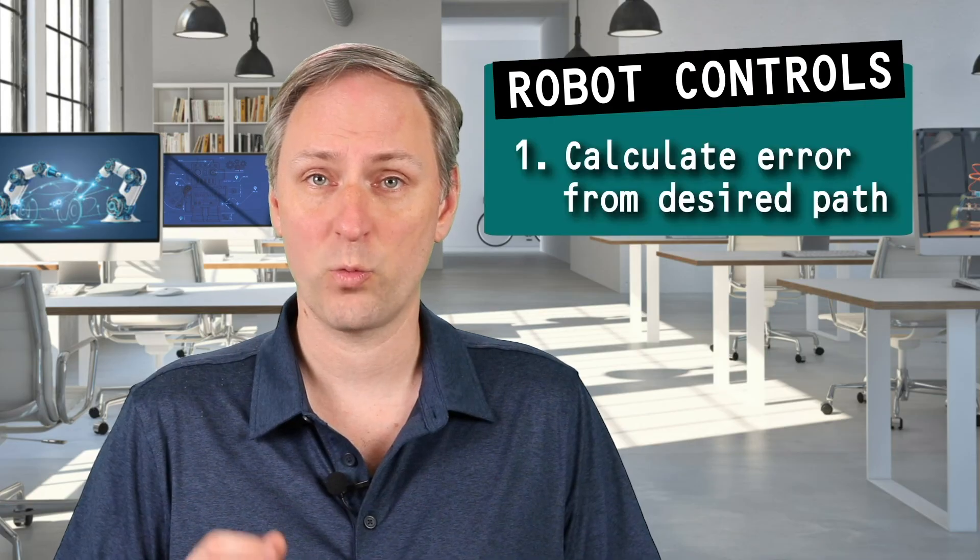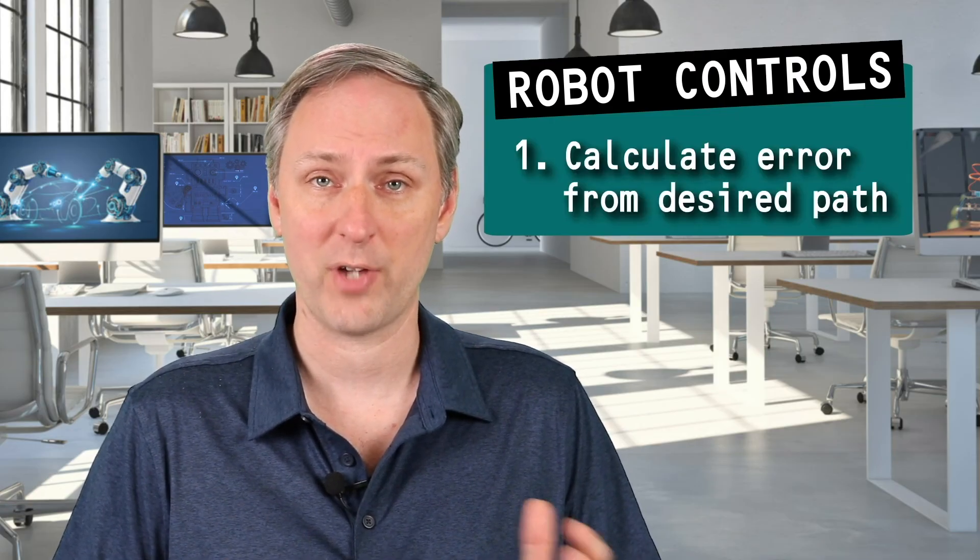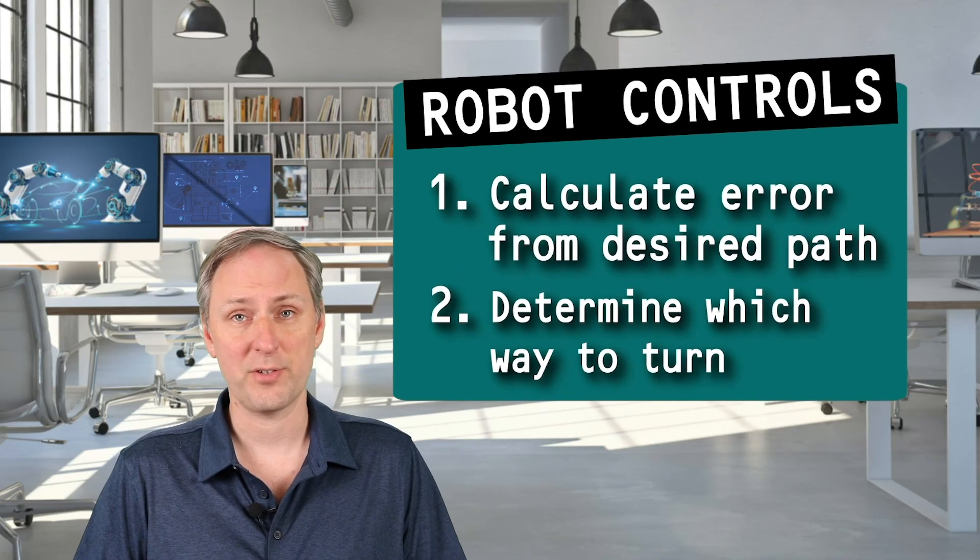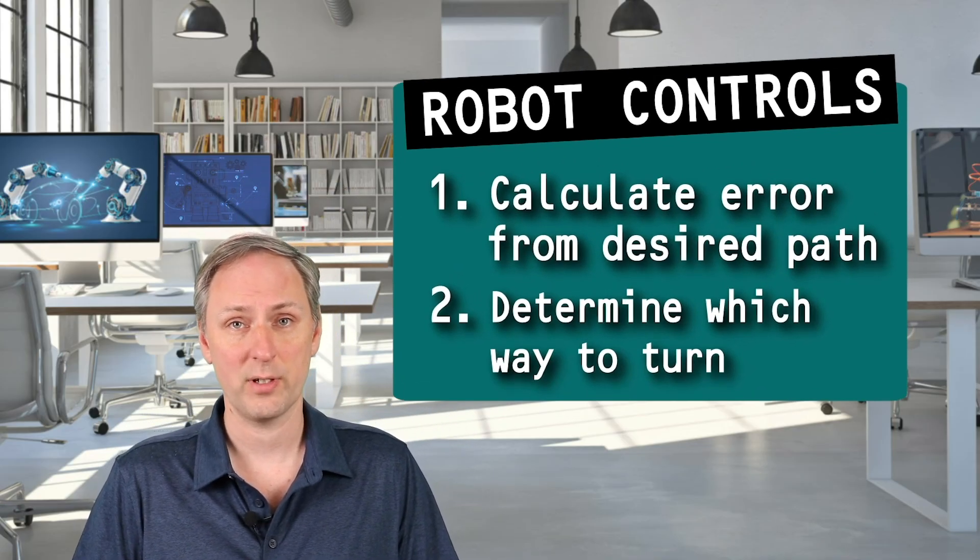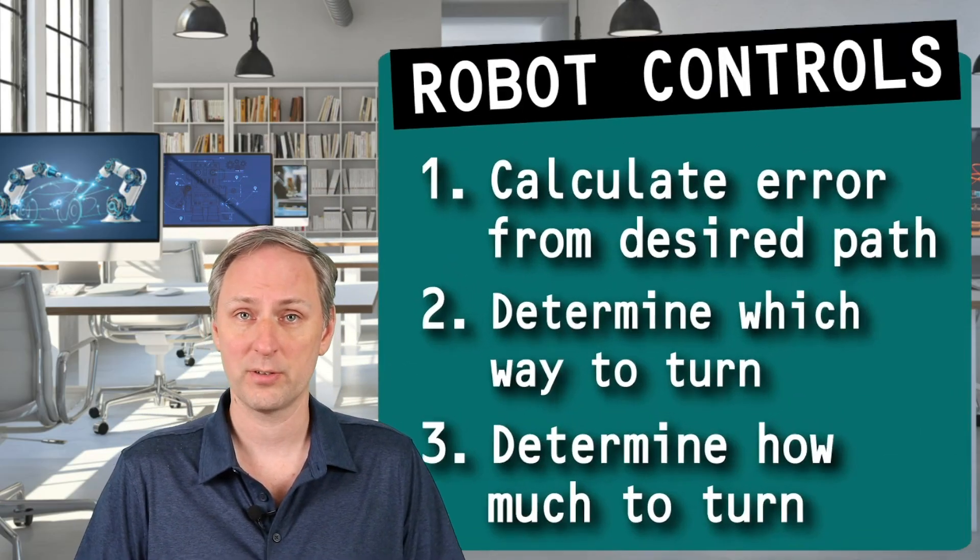First, it must determine where it is and calculate errors in relation to its desired path. Then it needs to figure out which way to turn and how much to turn. Hey, robot, can you follow the line?